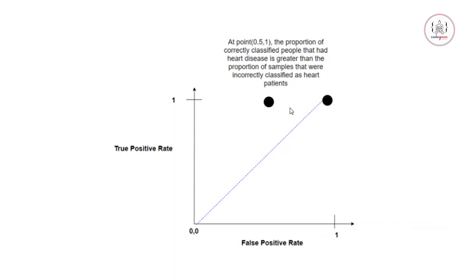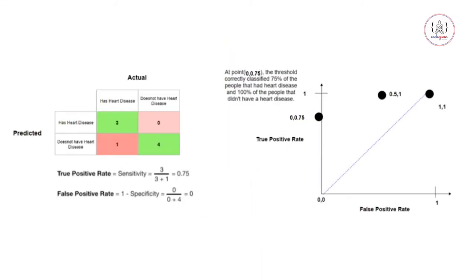We change the threshold again, draw the confusion matrix, and plot the new point. At this threshold, the true positive rate is 0.75 and the false positive rate is 0. This means the threshold correctly classifies 75% of people who had heart disease, and 100% of people who did not have heart disease were also correctly classified.